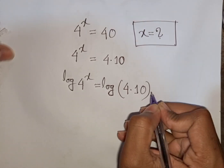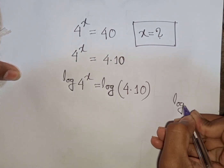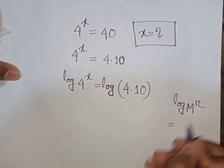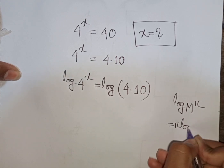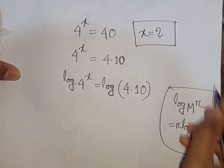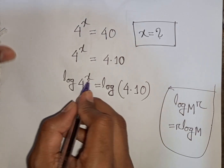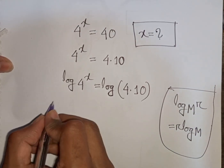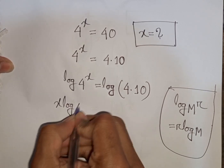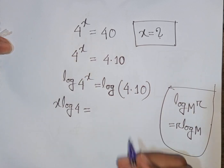Now, we apply the rule that log m power r is equal to r log m. This power r moves to the front. So, this power x will move to the front, giving us x log 4 is equal to log of 4 times 10.